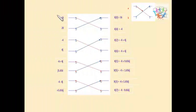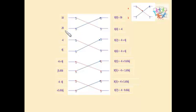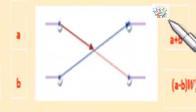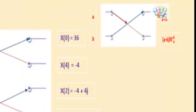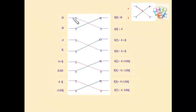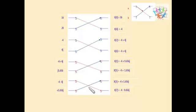The output from stage 2 is taken as input for stage 3. The twiddle factor for stage 3 is W2⁰, written at the bottom of each X. Using the DIF method, for the first X with values 16 and 20: top = 16 + 20 = 36; bottom = (16 − 20) × 1 = −4. The same procedure is repeated for the remaining X's.